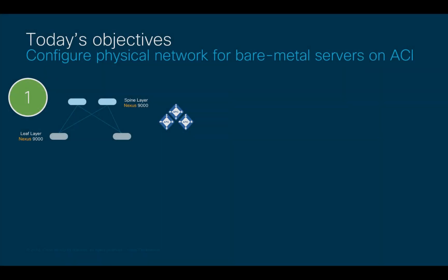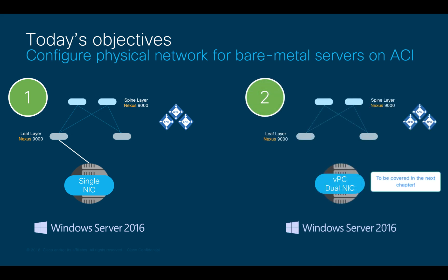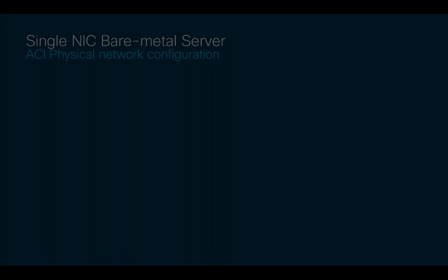In today's chapter, we will configure the Physical Network for Single-NIC Bare Metal Servers. In our case, we are running a server with Windows 2016 attached to an ACI leaf. In the next chapter, we will also cover how to perform a Bare Metal Server connection with Virtual Port Channel, so stay tuned.